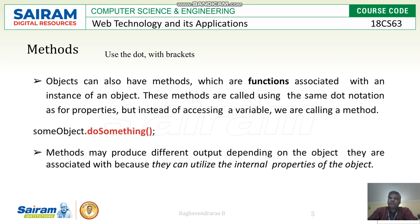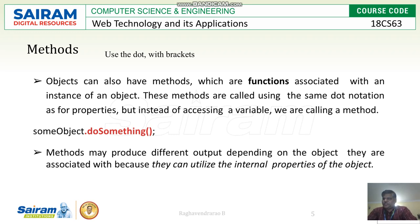Instead of accessing a variable, you are accessing a method — the function you want to access. For example: someObject.doSomething() — the dot operator is used. Methods may produce different output depending upon the object they are associated with, and they can utilize the internal properties of that particular object.